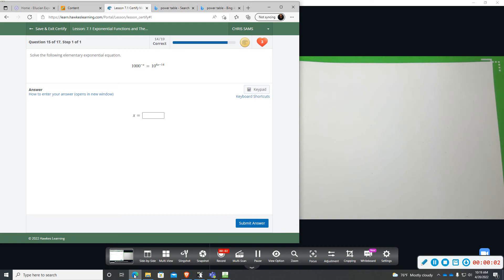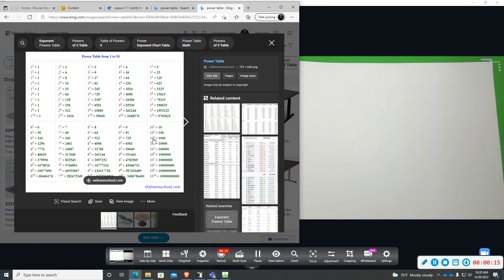Alright, number 15. We have 1000 to the negative x and then we have a base of 10. So you want to be familiar with this. You can write 1000 as a power of 10. That would be 10 to the 3rd.